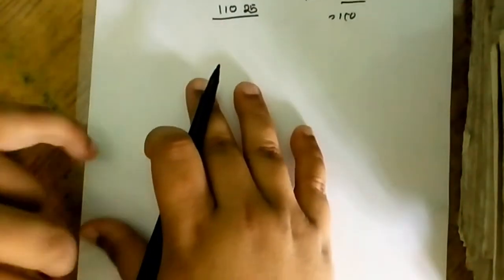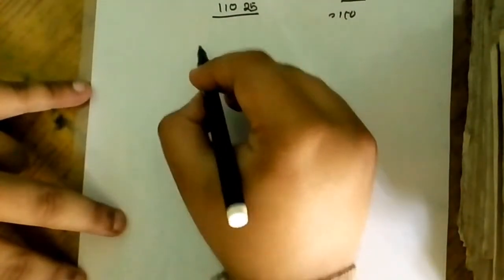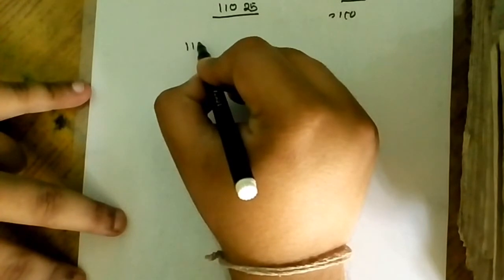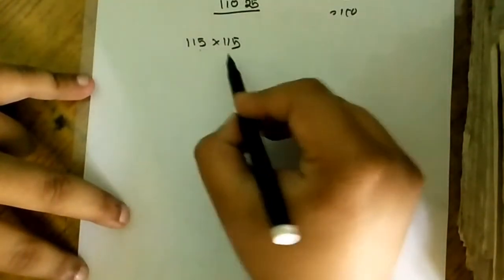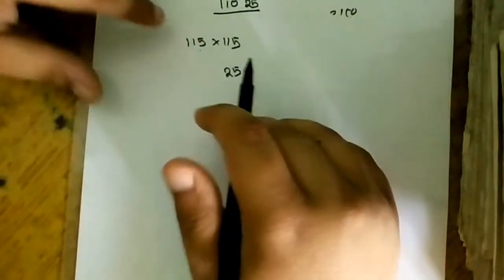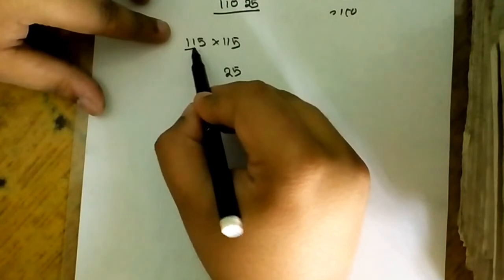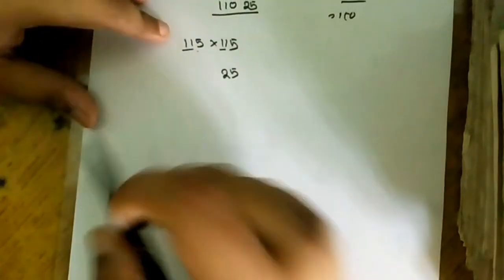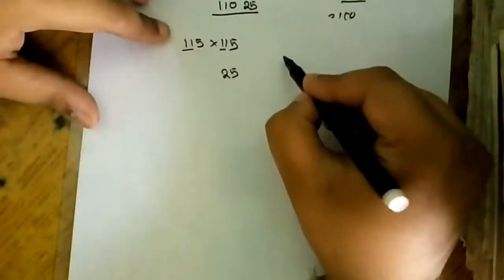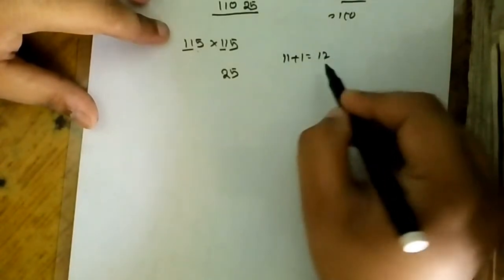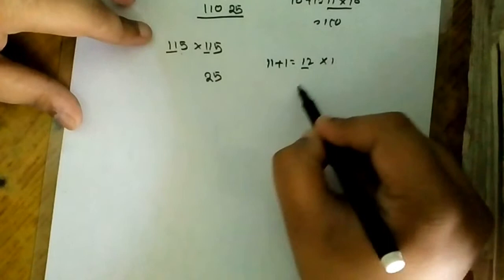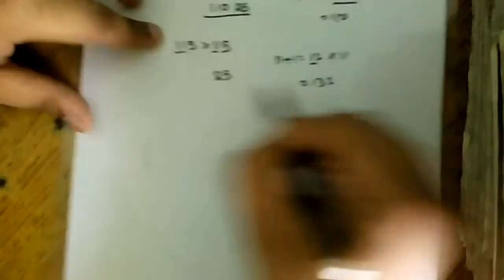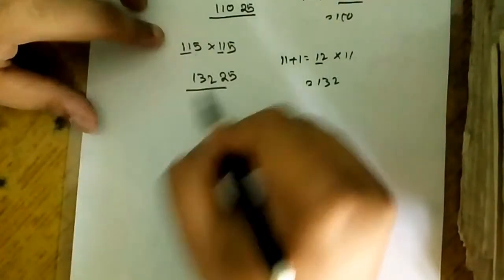Now let's take another example, and this will be the last. 115 into 115. Again the same process: 5 into 5 is equal to 25. The remaining is 11 and 11, so I will add 1 with any 11, that is 11 plus 1 equals 12. Now I have to multiply 12 with the remaining 11. That is 12 into 11 is equal to 132, so 132 25 will be the required answer.